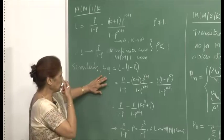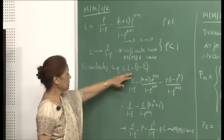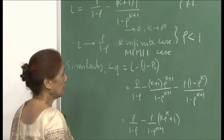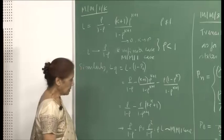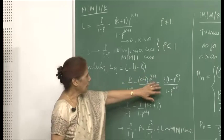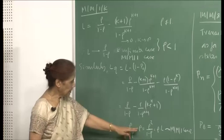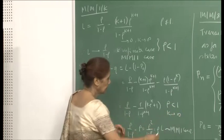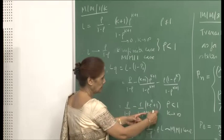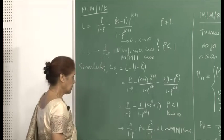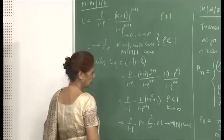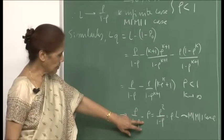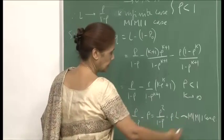Similarly, the derivation for L_q: L_q equals L minus (1 minus p_0). You can see from the formula for L_q that it will be the summation of (n minus 1) times p_n. As k goes to infinity and rho is less than 1, this portion goes to 1, and you are simply left with rho. Therefore, L_q becomes rho squared upon (1 minus rho), which is the same as the MM1 case.